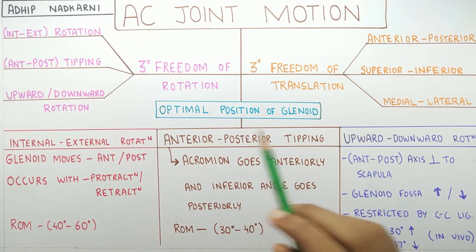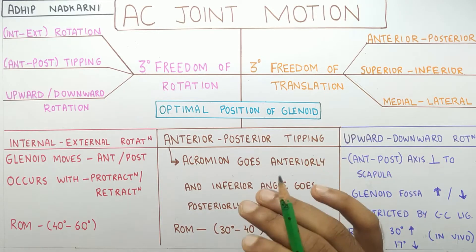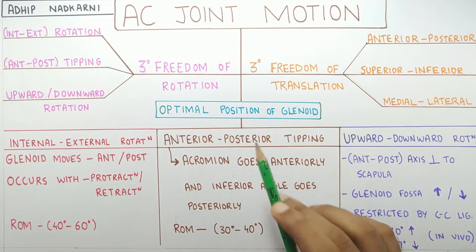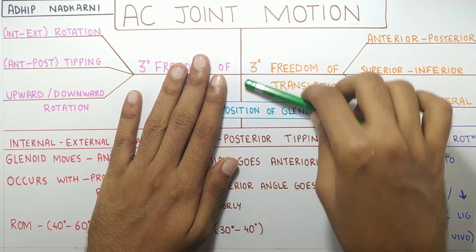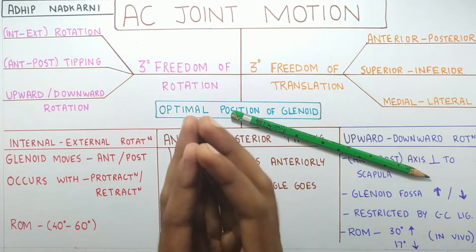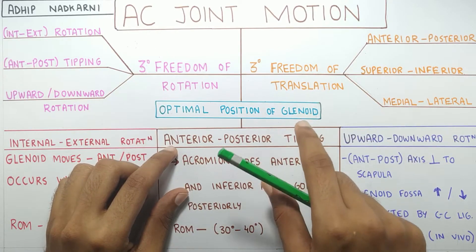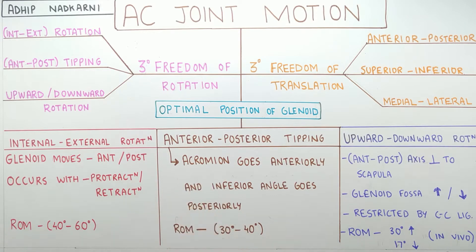In this video we are going to talk about the AC joint motion. The last video was about the AC joint structure and ligaments, so let us look at the function of the AC joint. The main purpose of AC joint motion is optimal positioning of the glenoid. When the humerus is moving on top of the scapula, the humeral head needs a proper base to move on — that is the glenoid. The main function of the AC joint, along with the SC joint, is that together they provide mobility to the scapula so the glenoid can be positioned optimally for good movement of the humeral head.